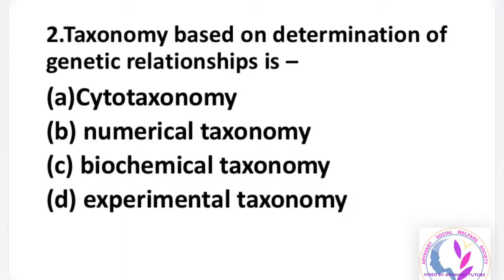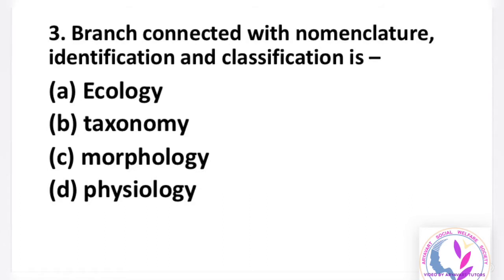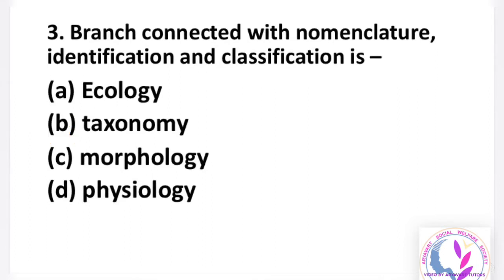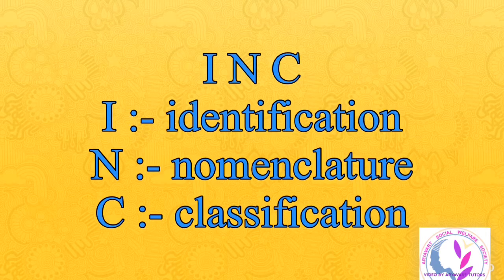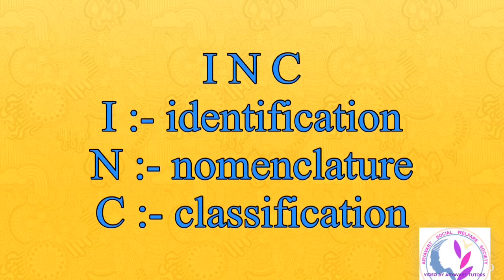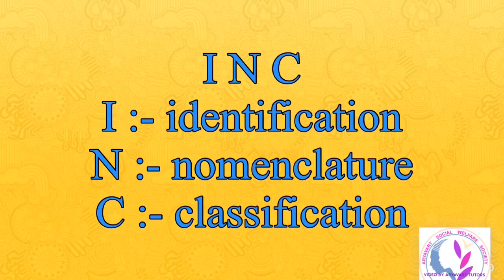Question number 3: the branch connected with nomenclature, identification, and classification is — option A: ecology, B: taxonomy, C: morphology, D: physiology. The answer is B, taxonomy. According to Carolus Linnaeus and binomial nomenclature, taxonomy deals with identification, nomenclature, and then classification of organisms.